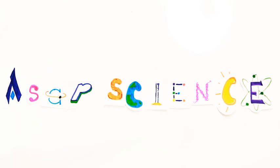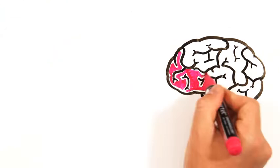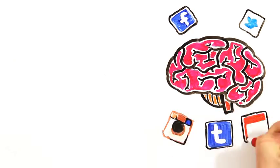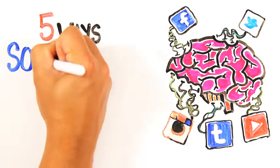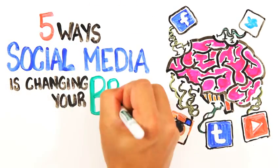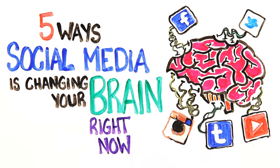With social media sites being used by one third of the entire world, they've clearly had a major influence on society. But what about our bodies? Here are 5 crazy ways that social media and the internet are affecting your brain right now.